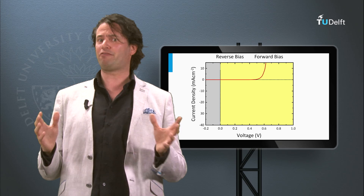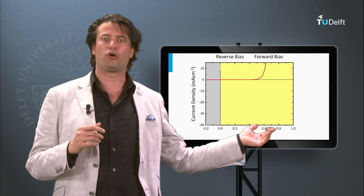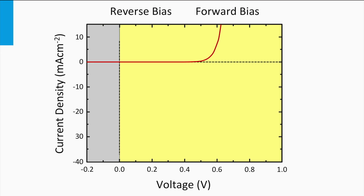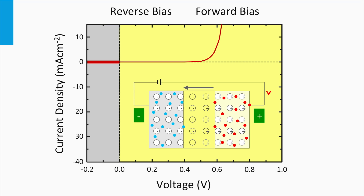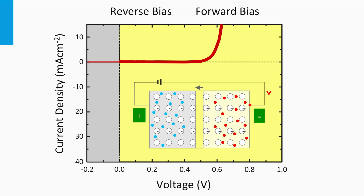The relation between current and voltage of a P-N junction can be illustrated in a so-called IV curve. The vertical axis corresponds to the current and the horizontal axis represents the voltage applied over the P-N diode. A negative voltage — shown in the gray area — corresponds to reverse bias, where the current is close to zero. A positive voltage — shown in the yellow area — corresponds to forward bias, where above a certain voltage the current starts to significantly increase. This is the characteristic IV curve of an ideal silicon P-N junction in the dark.